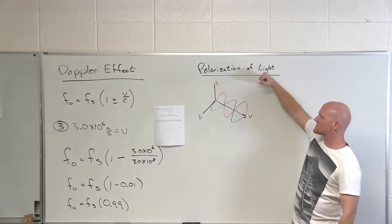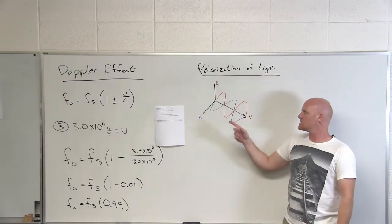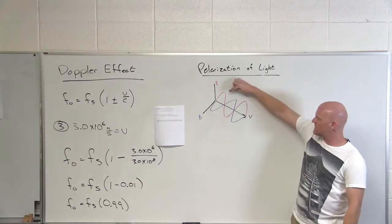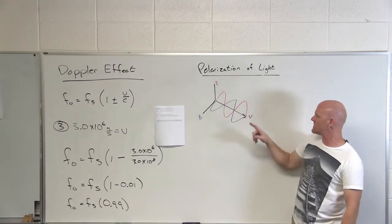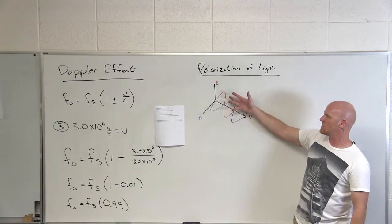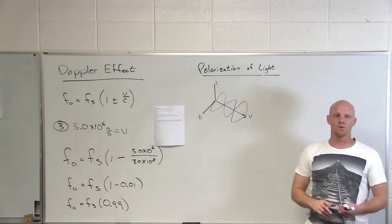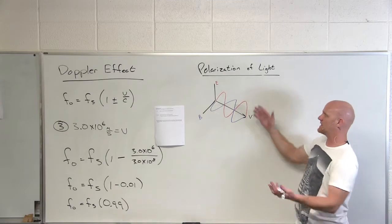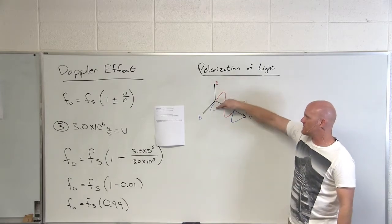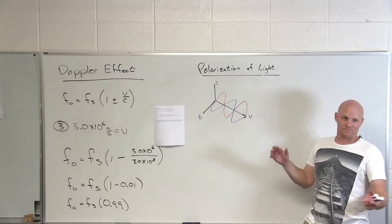I don't really care, but when we talk about the polarization of light, it turns out it can have any orientation. So here I've got the electric field on this axis, magnetic field on this axis, but I could rotate this all the way around 360 degrees and have an infinite number of possible polarizations associated with light.